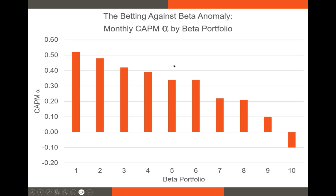This was shown in a 1972 paper by Black, Jensen, and Scholes. More recent evidence from the 2010s shows that even with an additional 40 years of data, this anomaly is still present. Low beta stocks still have positive alphas, while stocks in the 10th portfolio with the highest betas still offer slightly negative alphas. The alphas have diminished somewhat but are still pretty consistent.